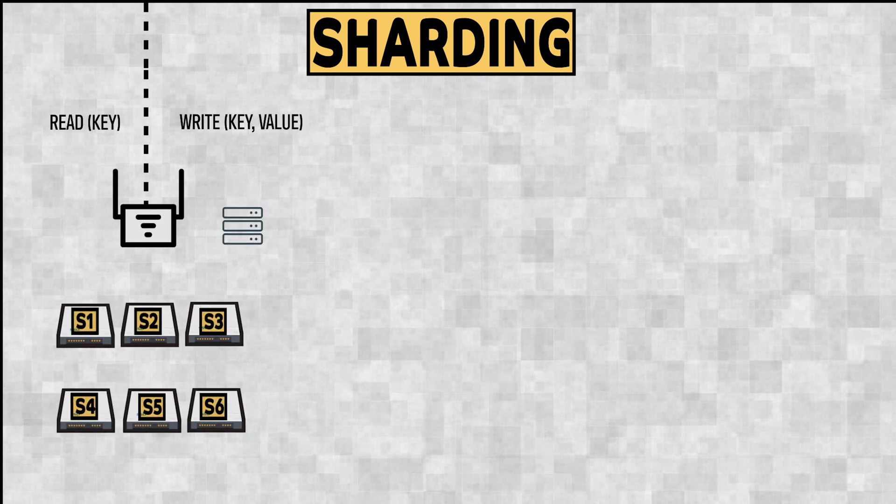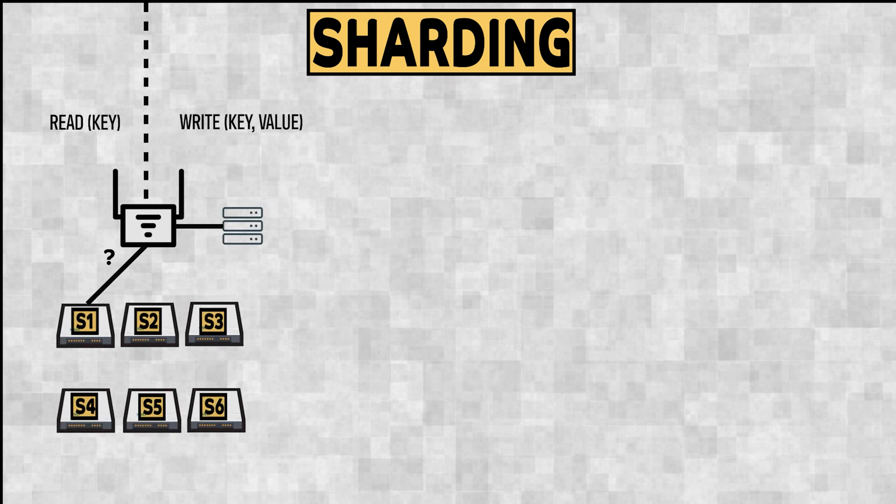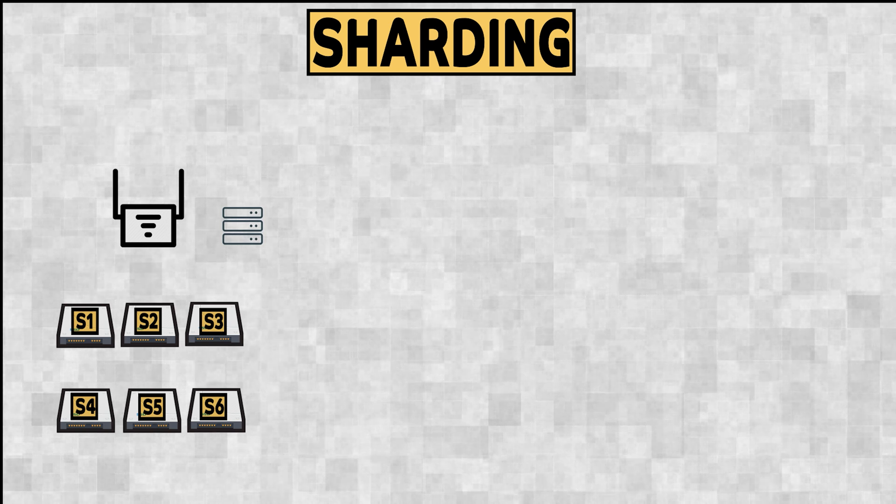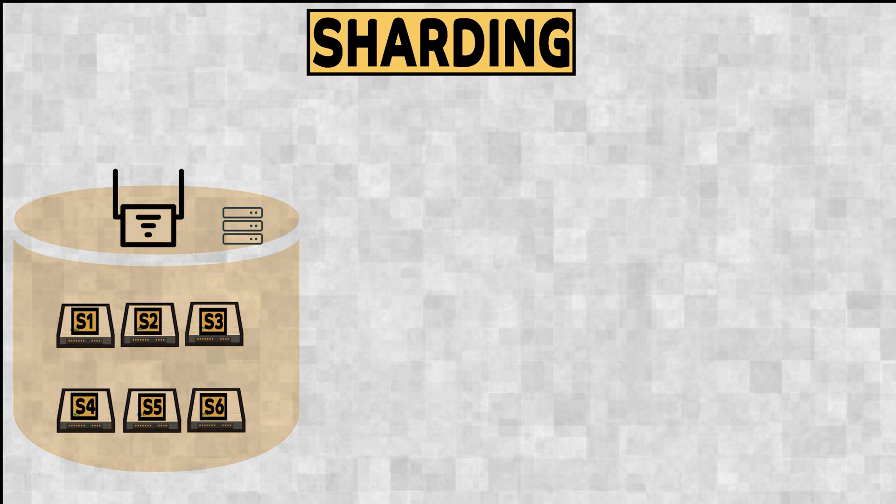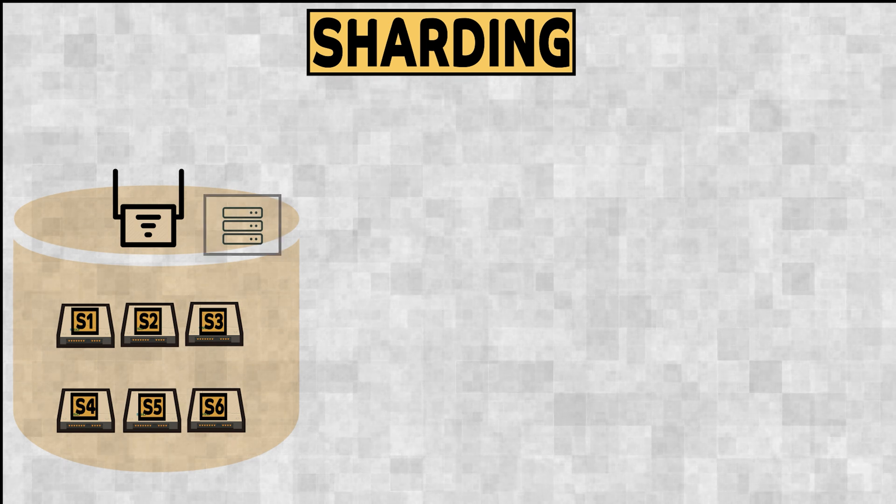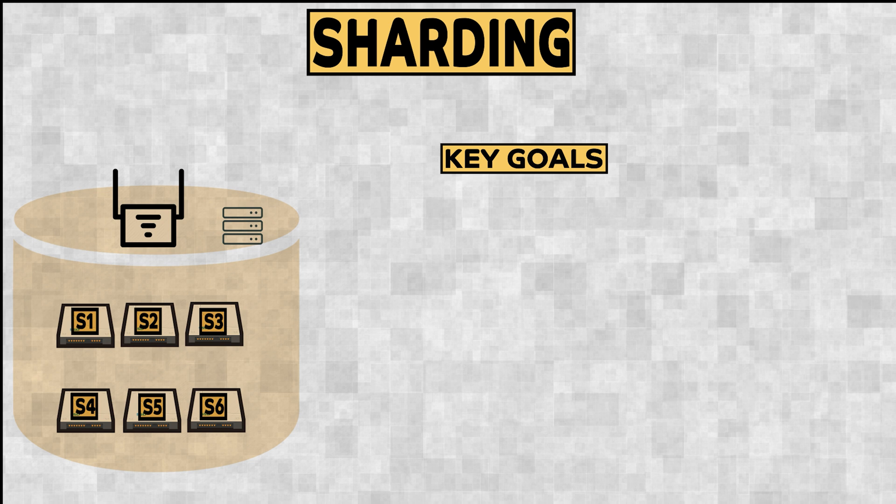You can have a read key request and a write key value request, and the router decides which shards to go to perform the read and write operations. This whole thing can be a single database in this case. Apart from figuring out which shard to go to, for which we have a config server, there are some key goals of sharding.